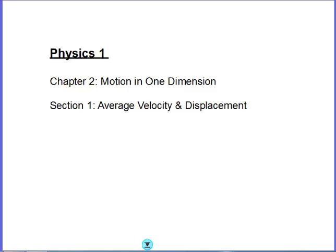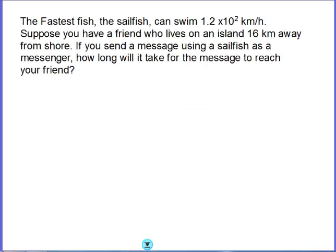So what I'd like to do is just run through a sample problem and kind of do an overview of what I would expect to see on our practice problems or the exams when we work through certain problems. So we've got the sample problem here. The fastest fish, which is the sailfish, can swim 1.2 times 10 to the second kilometers per hour, or we can rewrite that as 1,200 kilometers per hour. We like to use scientific notation quite a bit, so you'll see that often.